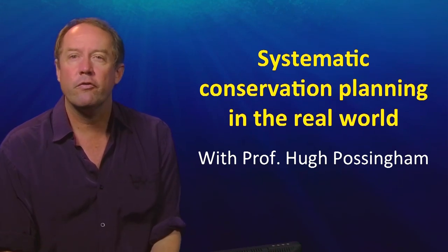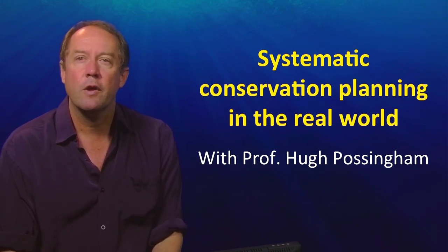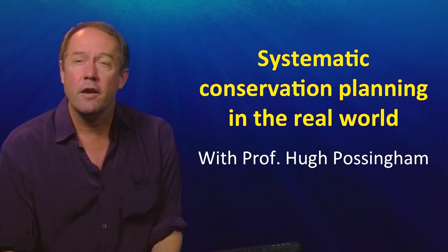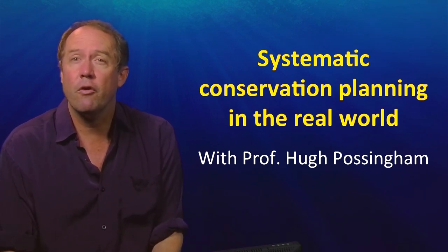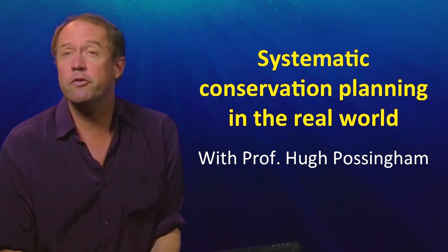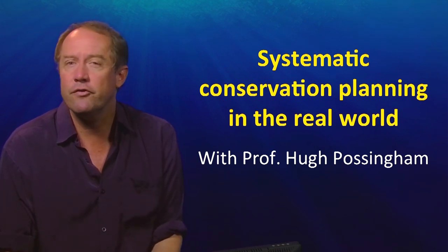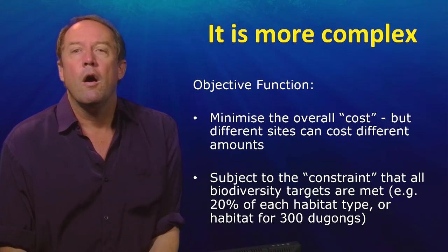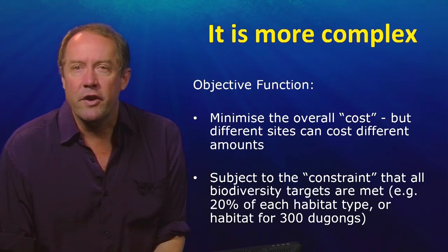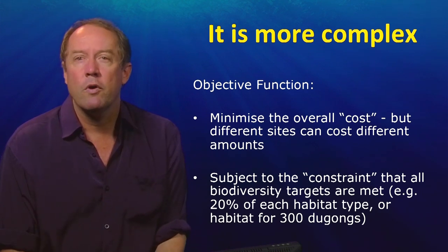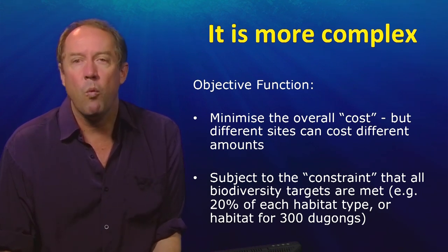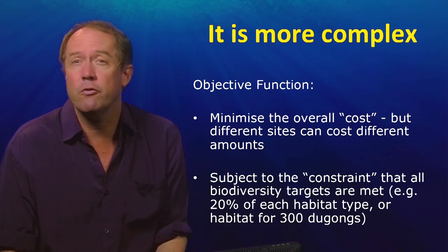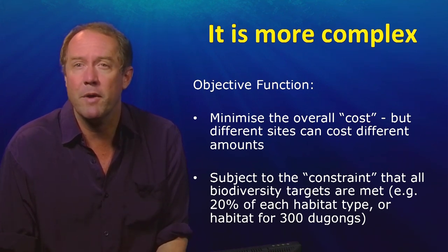In the last lecture we discussed the principles of conservation planning. Now we're going to look at more real world examples of conservation planning and see that the situation is often much more complicated. The last example we looked at had just eight sites with ten features, very simple objectives — we just wanted to get one example of every site, and the cost of every site was the same.